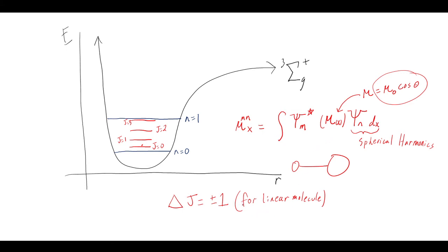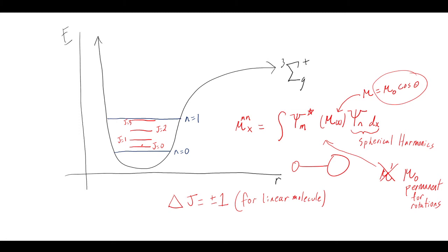For linear molecules, that's the selection rule: ΔJ = ±1. During this derivation, the dynamic dipole μ' — which mattered for vibrations — drops out completely. Only the permanent dipole moment μ₀ matters for rotations. We foreshadowed this a few lectures ago. The dynamic dipole matters for vibrations; the permanent dipole matters for rotations. The dynamic dipole drops out entirely for purely rotational transitions.